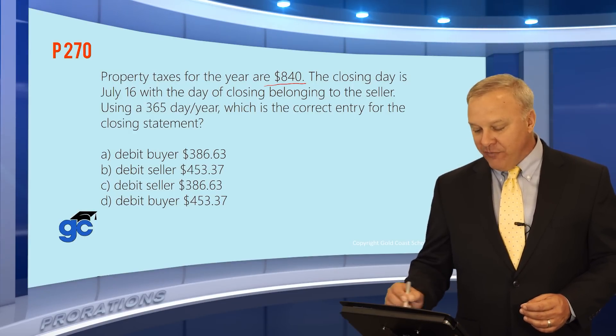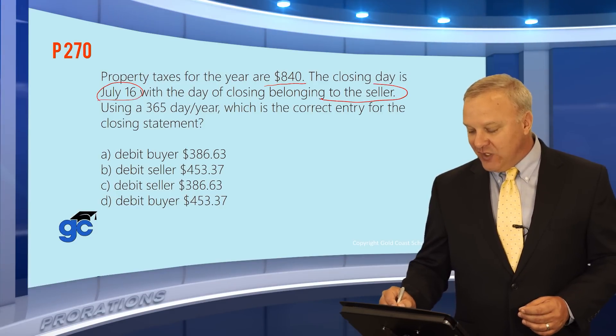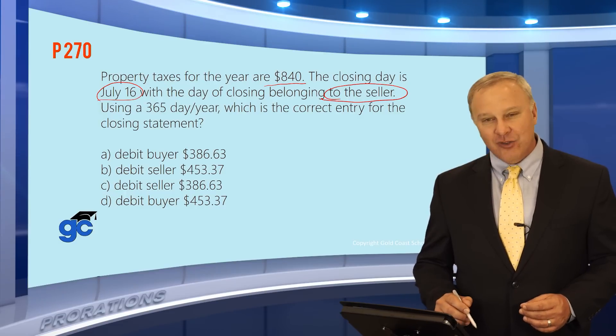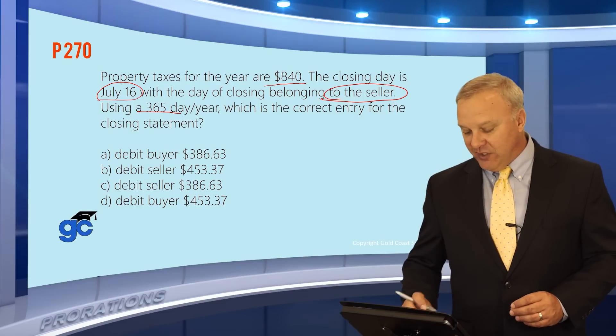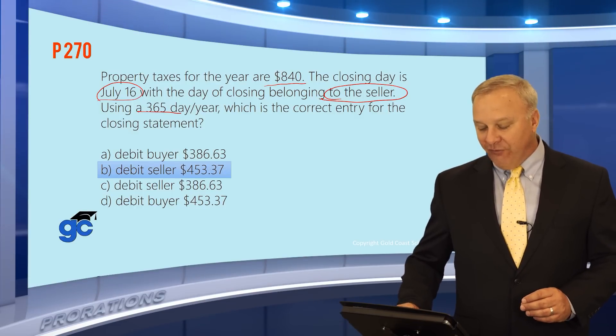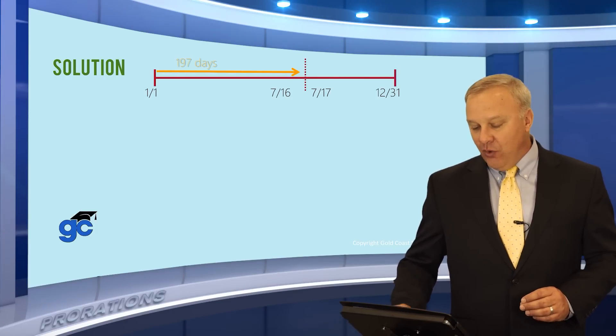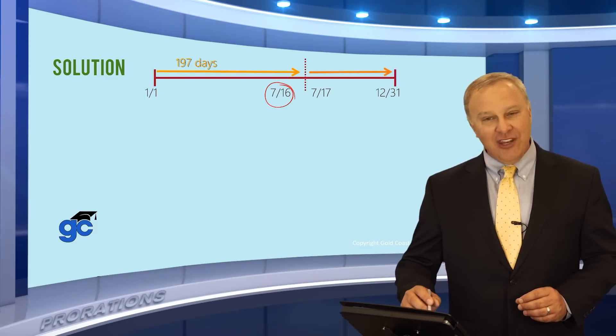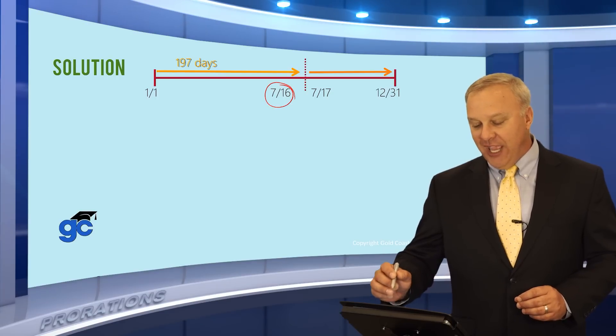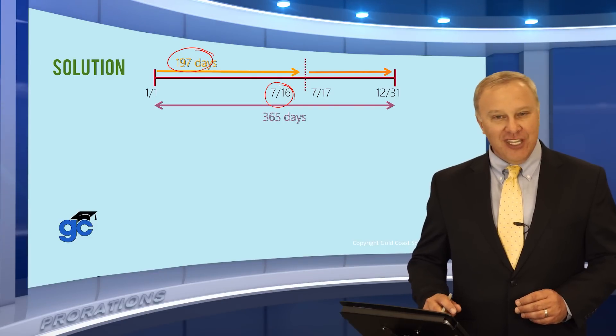Let's go a little further. It says the closing day or day of closing is July 16th, and it says the day of closing belongs to the seller. Using a 365-day year, so don't worry about leap years and all those kind of things, which is the correct entry on the closing statement. Let's take a look here. We say it's going to be a debit to the seller for $453.37, but let's look and find out why. Again, we draw our timeline. In this case, we've got the day of closing, which is going to go over to the seller side, July 16th. If we add those days up, January, February, March, April, May, June, and July up to the 16th, we will get 197 days. Total number of days in the year is 365.